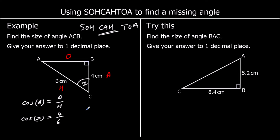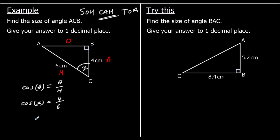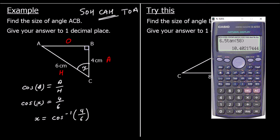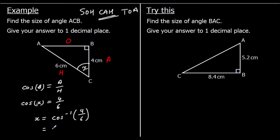To find an angle — to get cos away from x — we do the opposite of cos, which is shift cos (arc cos). So x equals shift cos of 4 over 6. We type that into the calculator: shift cos 4 over 6. And to one decimal place, that's 48.2 degrees.